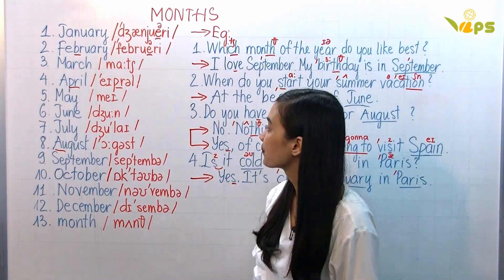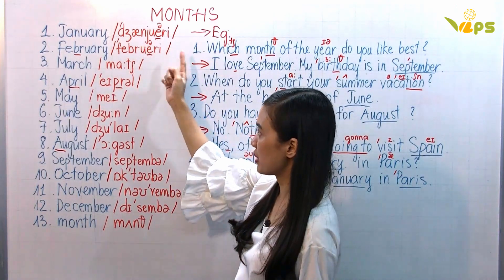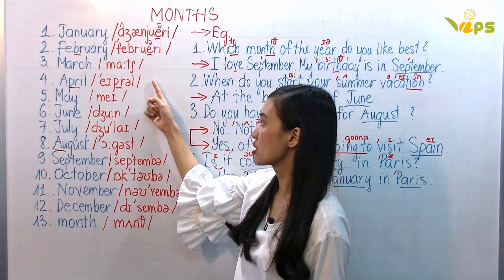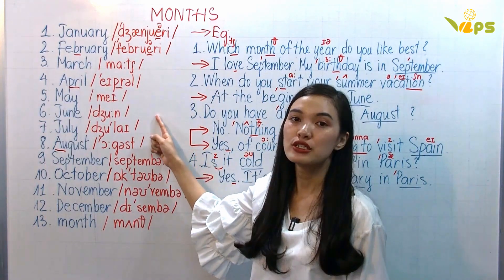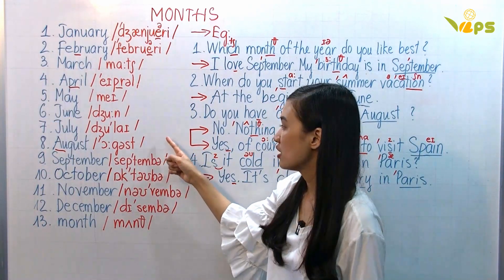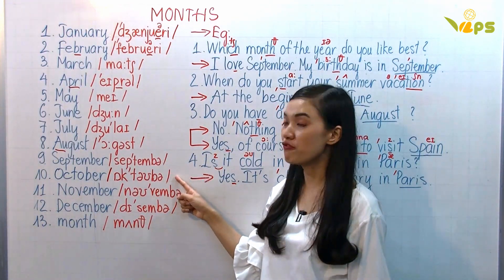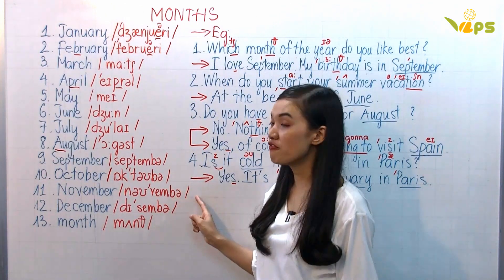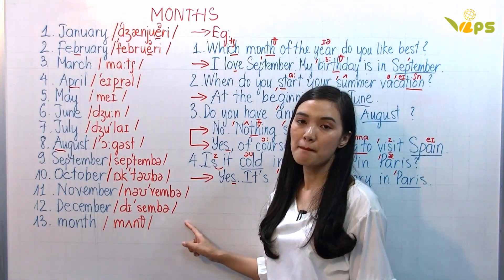Again, one more time: January, February, March, April, May, June, July, August, September, October, November, December. Month.